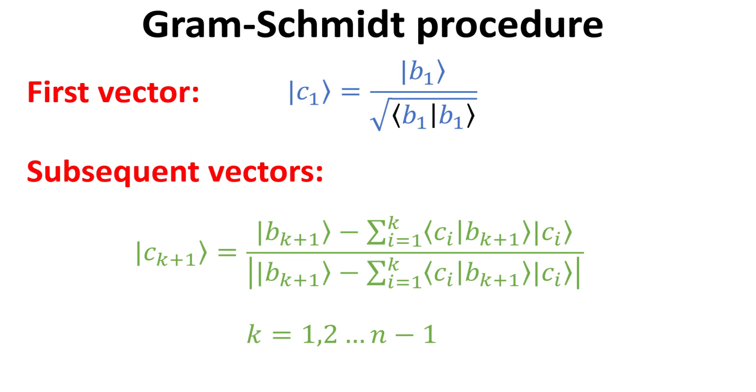Hopefully, by now you see the pattern. The subsequent vectors C4, C5 and so on can be obtained in similar fashion. In summary, after defining the first vector C1, the subsequent C vectors can be obtained by taking the B vector counterpart and minus the components which are collinear with the previous C vectors and then normalizing it. The formula is explicitly given here as shown.